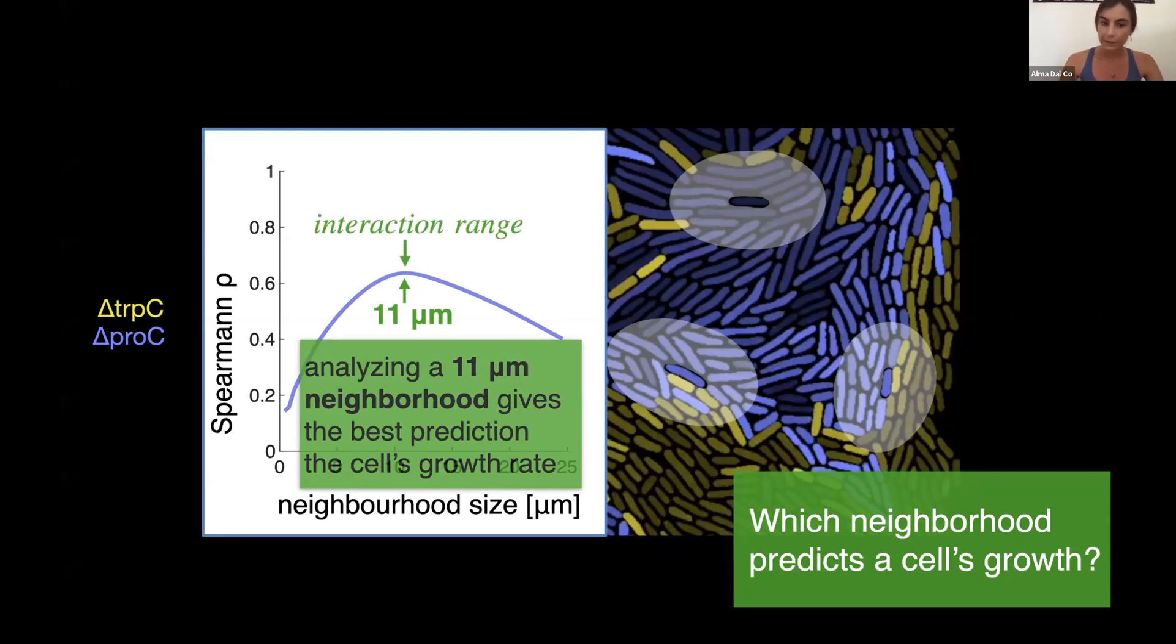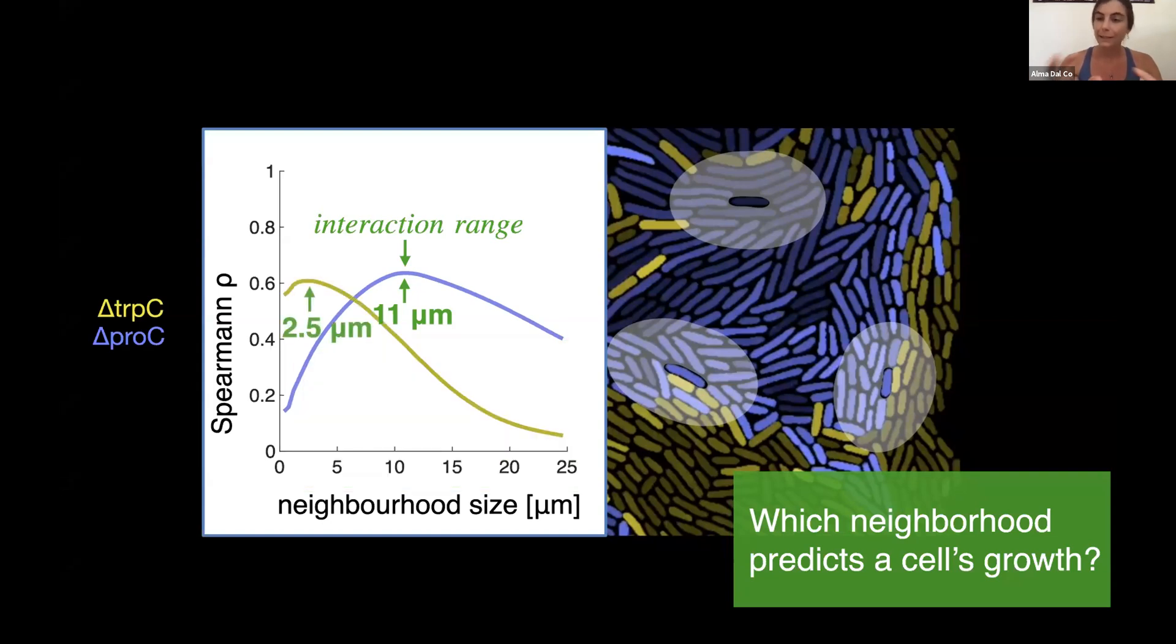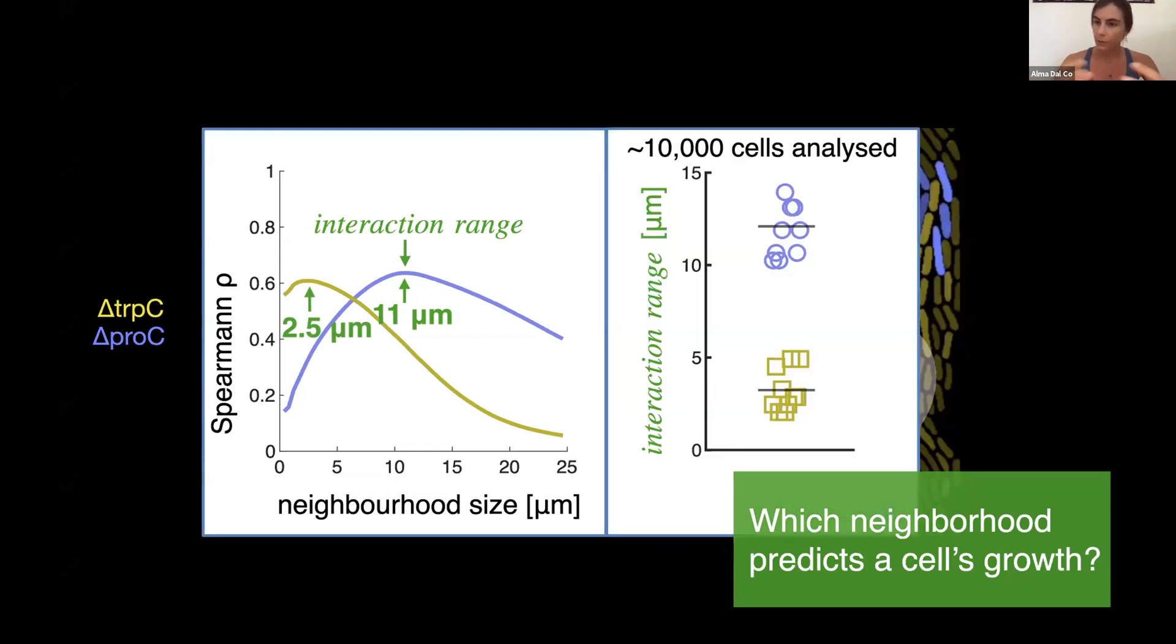Now interestingly, when we analyze the other cell type, we found that it interacts at a much smaller range. If we repeat this analysis on many replicates, we find this very consistent. So the purple cell type interacts at about 11 micrometers, which is about three times its cell length.